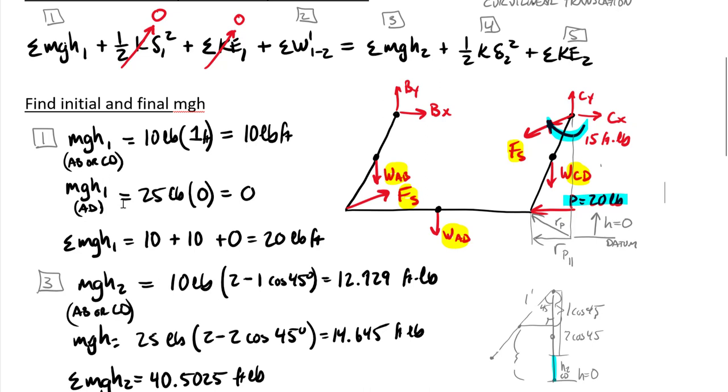So my initial elevation of A and D is going to be my datum. I'm going to measure H positive going upward from there. For my first MGH term, all of these pounds are pounds-force, therefore they include the mass and gravitational acceleration. Then H1 of a two-foot-long member which is vertical is one foot up to its centroid, so 10 pound-feet for either AB or CD.